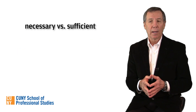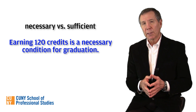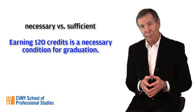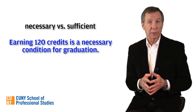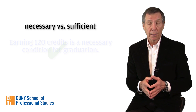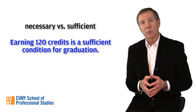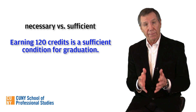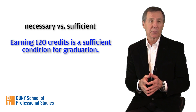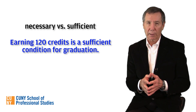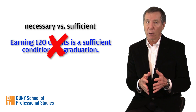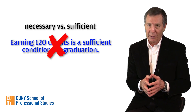How about this? Earning 120 credits is a necessary condition for graduation. That would mean that I can't graduate unless I've earned 120 credits, which is true. Here's another: earning 120 credits is a sufficient condition for graduation. Well, that means earning 120 credits is enough all by itself for me to graduate, which is clearly false — I also have to have a certain grade point average to graduate.